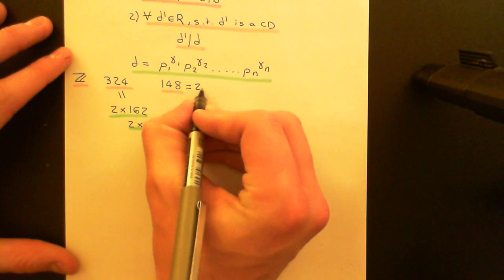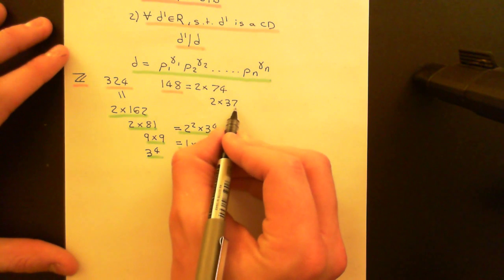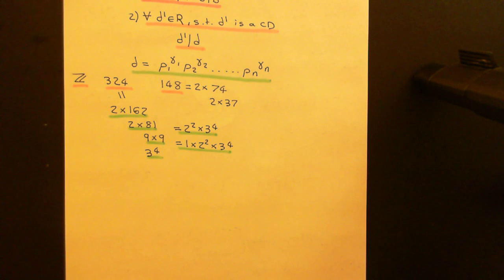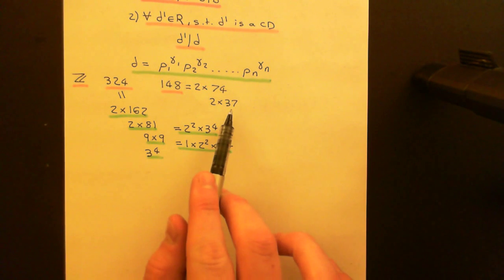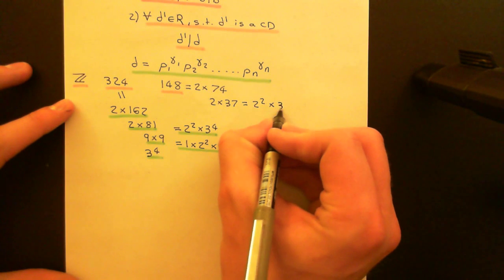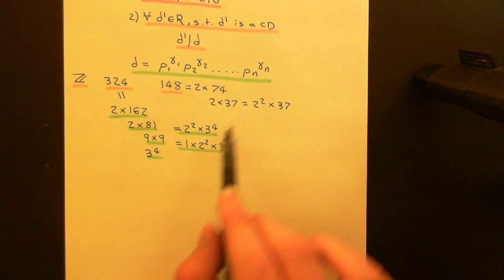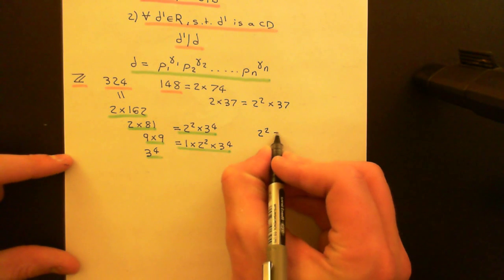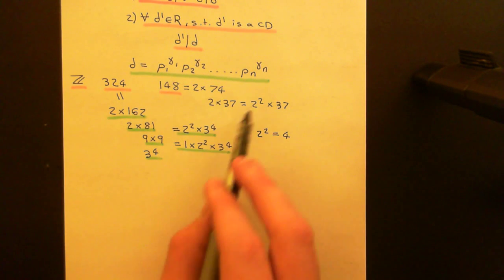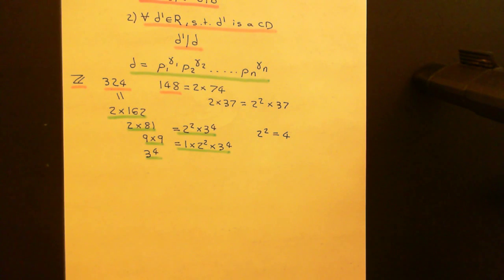Now let's do 148: write it as 2 times 74, then split 74 into 2 times 37. Is 37 a prime number? Yes, I think 37 is a prime number. So this looks like 2 squared times 37. Clearly here, the greatest common divisor looks like 2 squared — the biggest common portion of the prime factorizations is 2 squared. So our greatest common divisor appears to be 4. Another common divisor would of course be 2, which divides both of them and also divides the greatest common divisor 4.